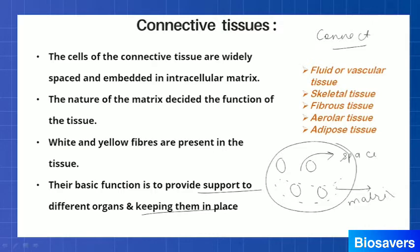The nature of the matrix decides the function of the tissue. On the basis of this matrix, connective tissue is divided into five main types: fluid or vascular tissue, skeletal tissue, fibrous tissue, areolar tissue, and adipose tissue. Now let's talk about each of them in detail.